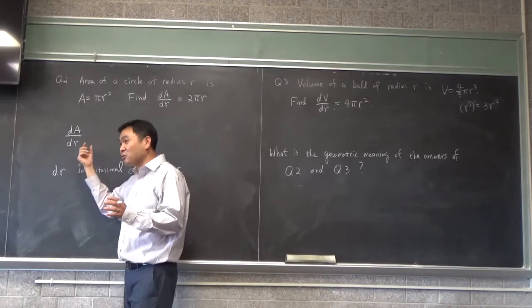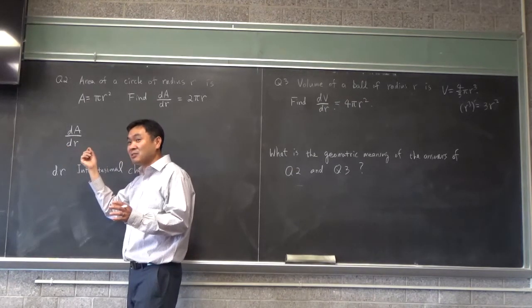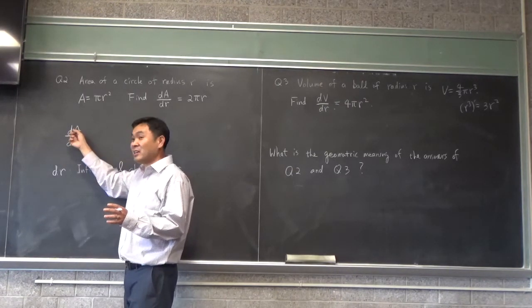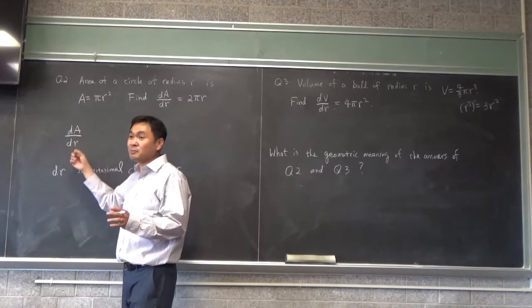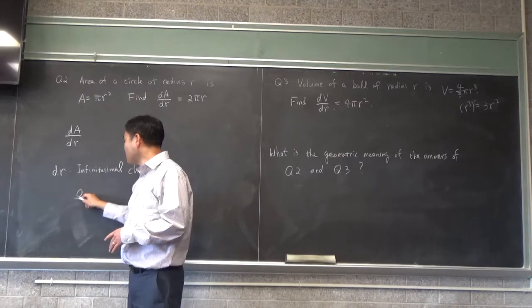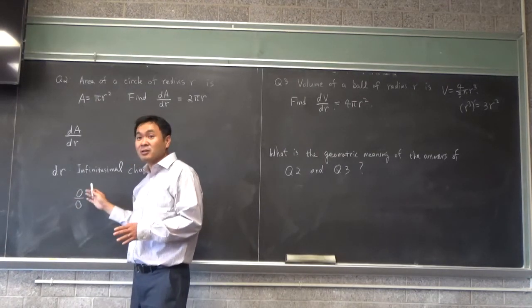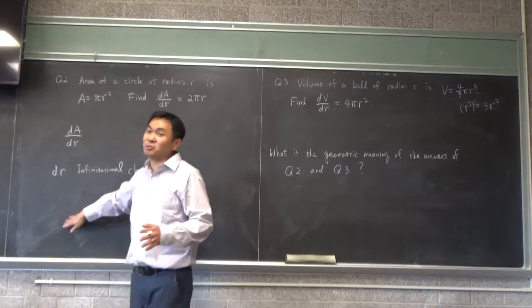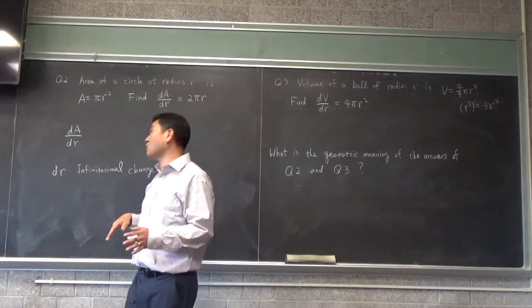You increase R ever so slightly, just a tiny, tiny bit, and you see how much A increased, and you take the ratio. Now normally, you're not allowed to have zero over zero. That's what we call undefined, right?